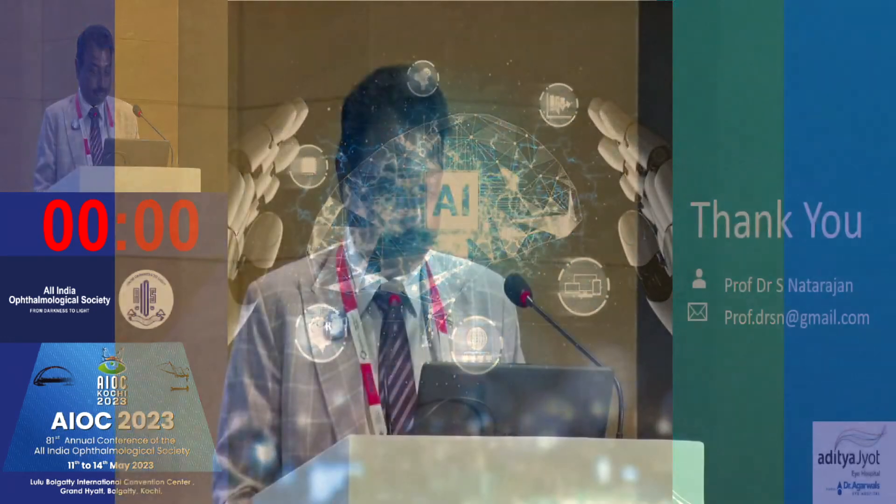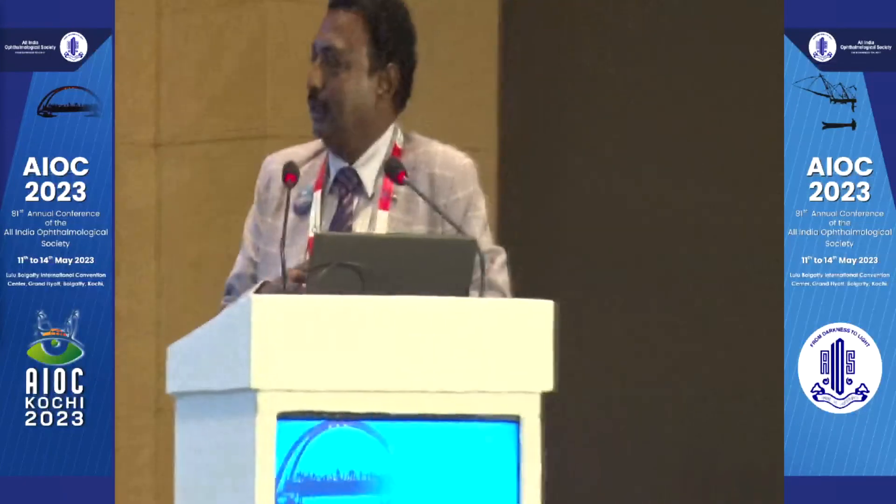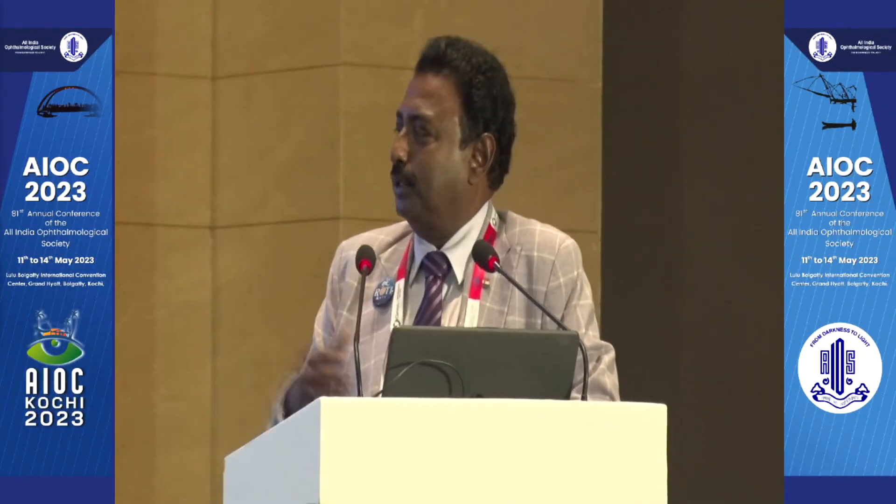Q: Are these cameras non-mydriatic or do you need to dilate the pupil? A: 45% can be done non-dilated. For the remaining 55%, based on the NHS study in the UK done in millions, one percent tropicamide after 10 minutes allows capture of pupils slightly more than 3.5 mm — correct, it will become 3.5 to 4 mm.